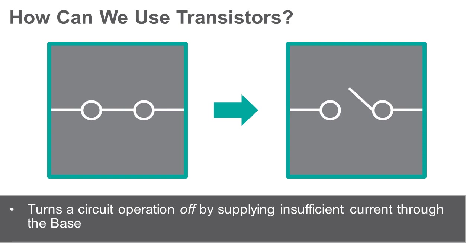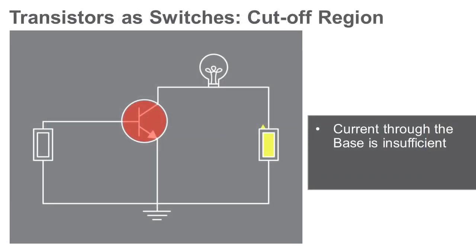Applying different currents to the base changes the current through the collector and emitter. When the current through the base is insufficient, the collector current is stopped and the circuit cannot operate. This means the transistor is operating in the cutoff region. This is a term that you've probably encountered in your lectures. We'll investigate this in greater detail when we do some measurements later in the lab.